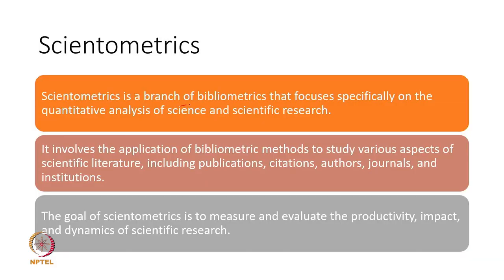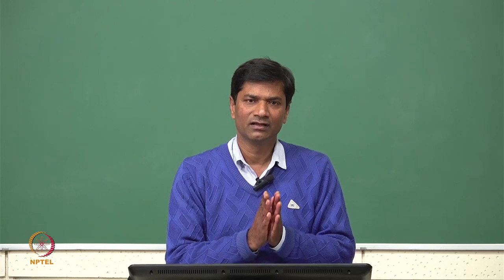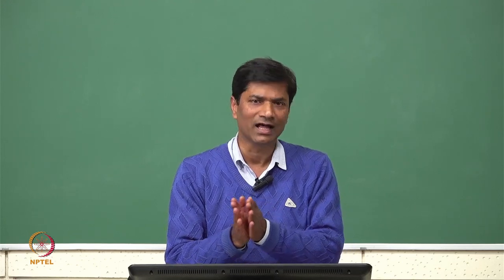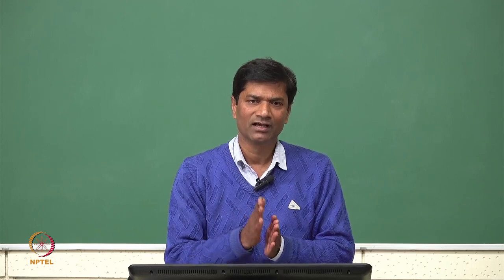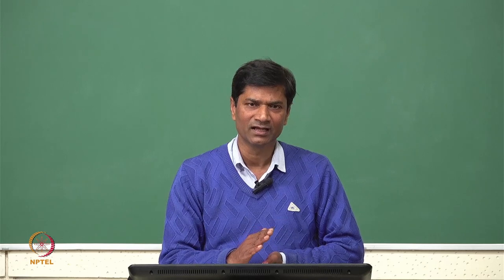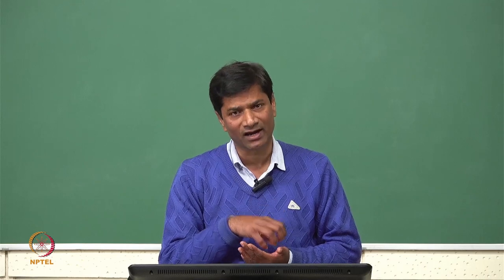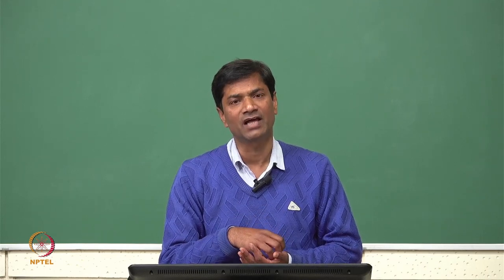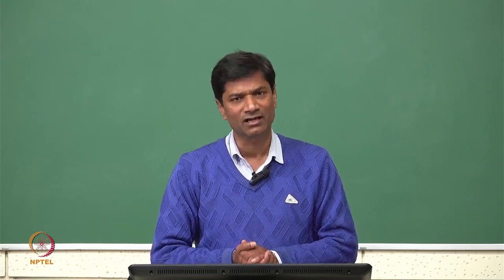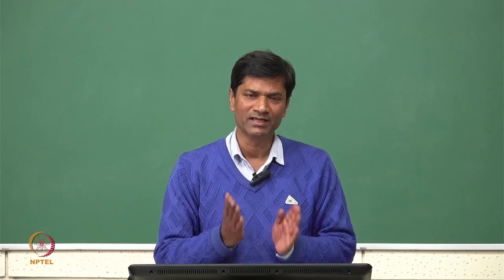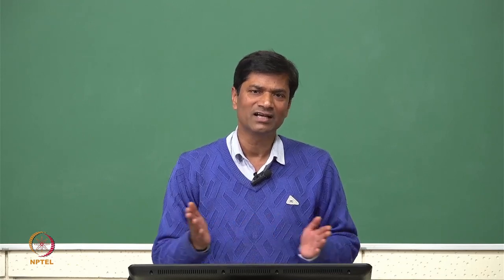Scientometrics is a branch of Bibliometrics that focuses especially on quantitative analysis of science and scientific research. As Pritchard said in Bibliometrics, it is the metrics of books and other forms of scientific communication. Here in Scientometrics, the focus is on quantitative analysis of science and scientific research.